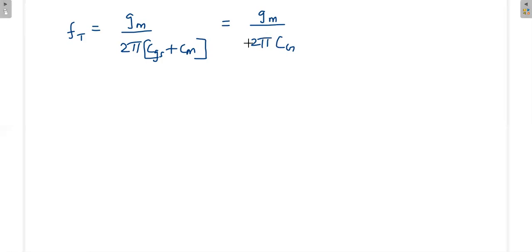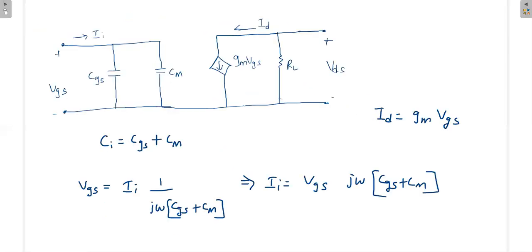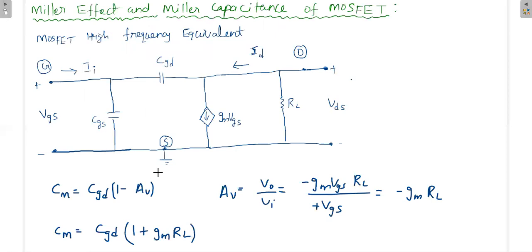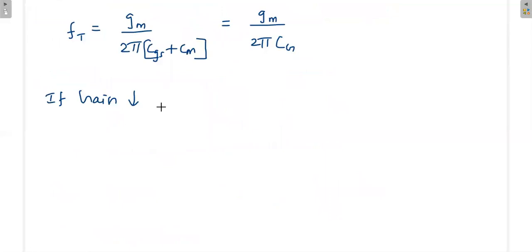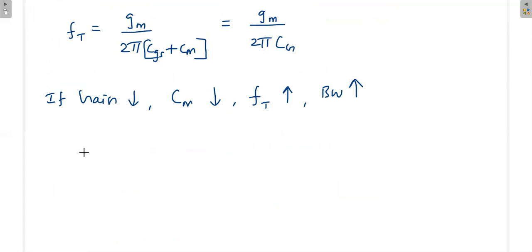If the ordinary gain AV of the amplifier decreases, GM·RL decreases, so CM decreases. If the Miller capacitance CM decreases, then ft increases, meaning the unity gain frequency increases. Since ft is related to bandwidth, the bandwidth of the amplifier also increases.